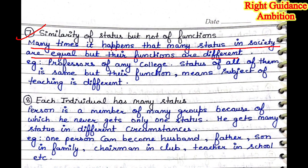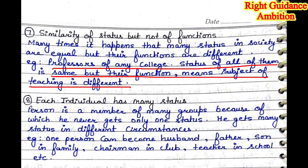Seventh point: similarity of status, but not of function. Many times it happens that many statuses in society are equal, but their functions are different. For example, the professors of any college all have the same status, but their functions — meaning the subjects they teach — are different. Many professors in college, whether in any subject, have the same status and the same respect, but their role or function can be different. Like, a physical education teacher's work is more practical and on-ground, while another subject may involve theoretical work. So teachers and professors can differ in function, but their status is the same.